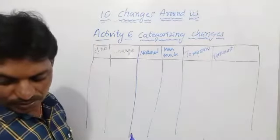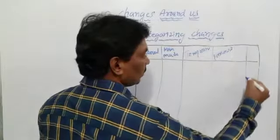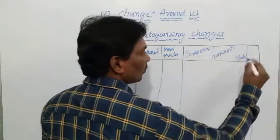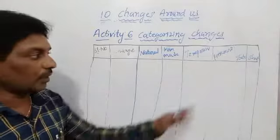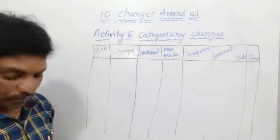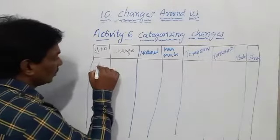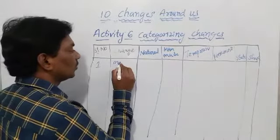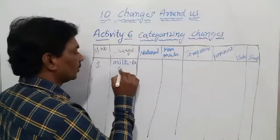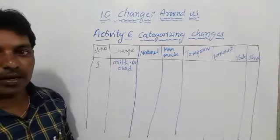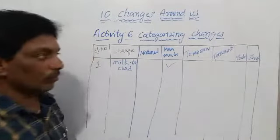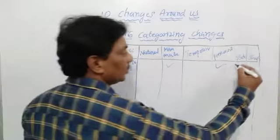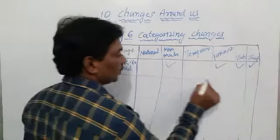We also have columns for state changes and shape changes. The first example in our table is changing milk to curd. It is a man-made activity and it is a permanent change. The state and shape also change, so we put the right marks. This is the first one completed.